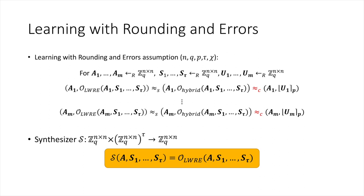One thing to note is that the depth of the synthesizer is determined by the chaining parameter tau. This is where our trade-off between the depth of the PRF and the size of the modulus comes in: if tau is large, we can set q to be very small and still have a tight reduction; if q is a bit larger, we can set tau to be much smaller and get a lower-depth PRF.